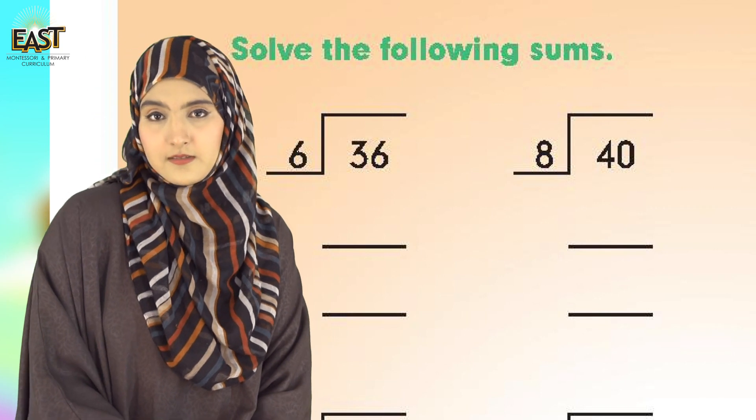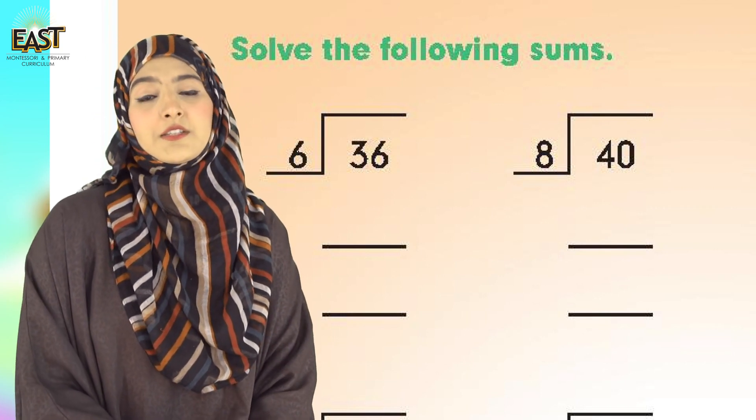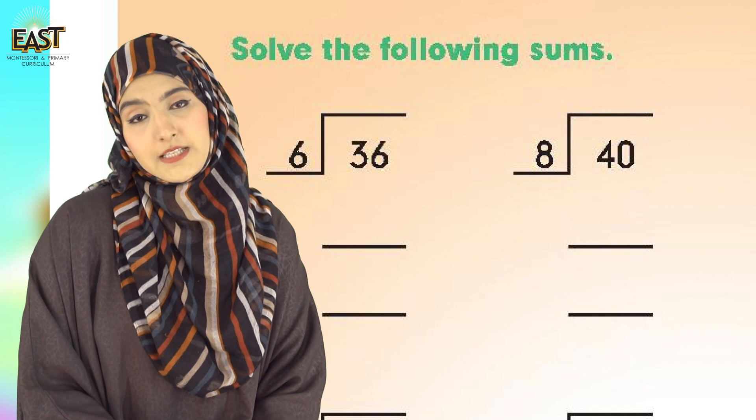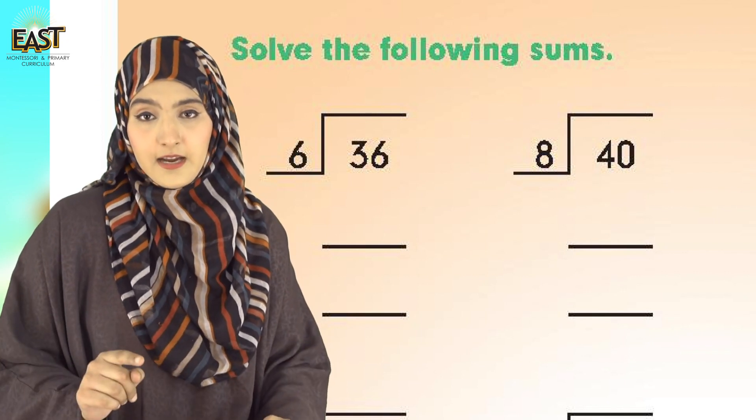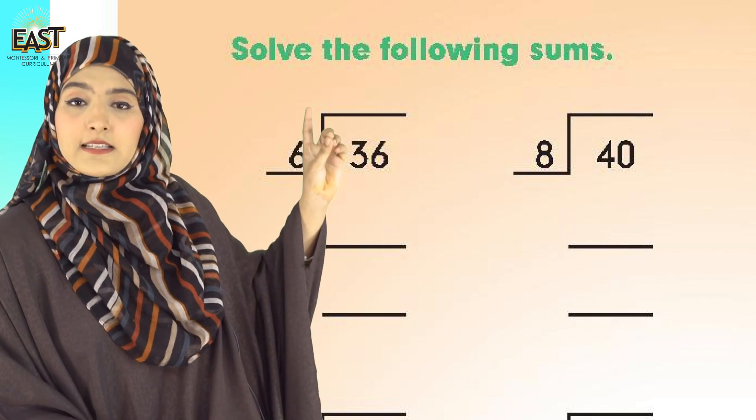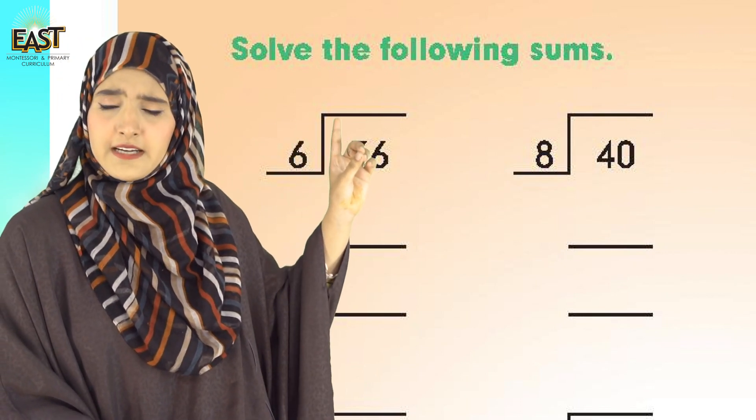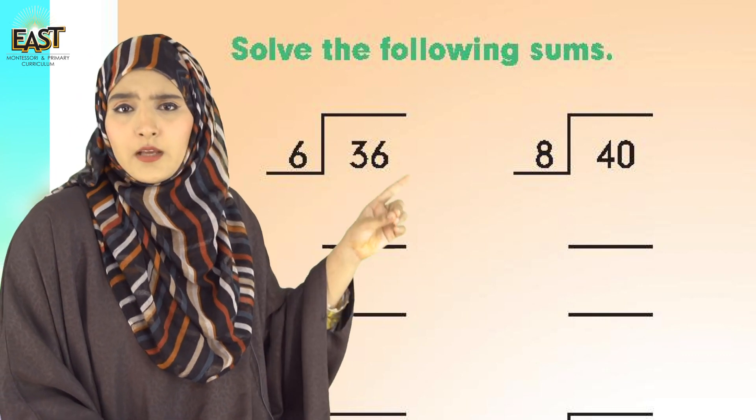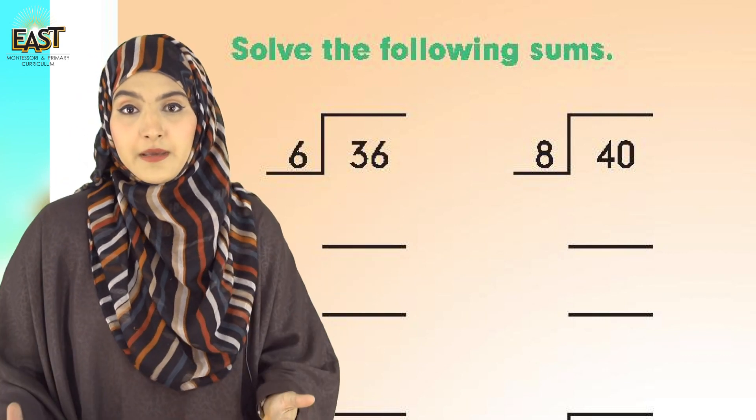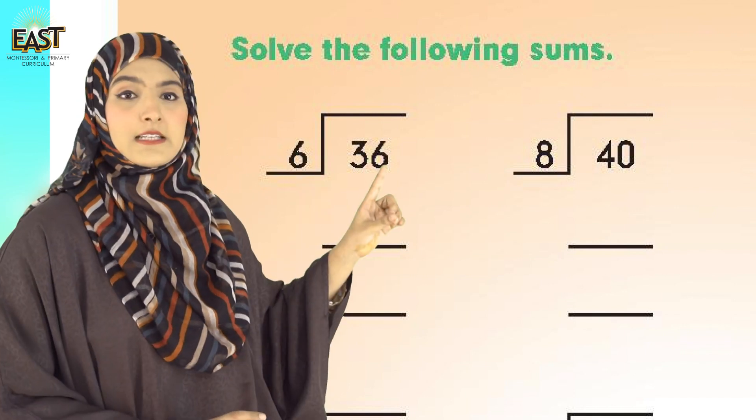6 times 1 is 6, 6 times 2 is 12, 6 times 3 is 18, 6 times 4 is 24, 6 times 5 is 30, 6 times 6 is 36. So the answer is: if you have 36 candies divided among 6 friends, each friend will get how many candies?